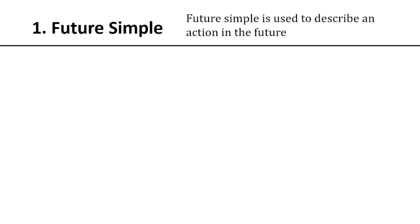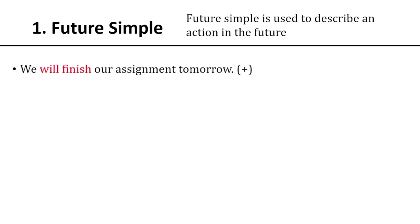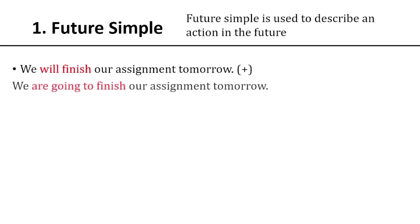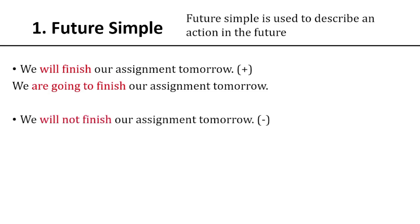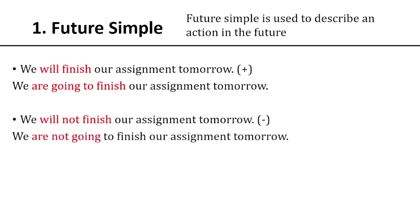What is future simple? Future simple is used to describe an action in the future. For example, 'We'll finish our assignment tomorrow' or 'We're going to finish our assignment tomorrow.' So we can use either 'will' or 'be going to.' This is the positive form, and this is the negative form: 'We will not finish our assignment tomorrow' or 'We're not going to finish our assignment tomorrow' — we just add 'not' here.